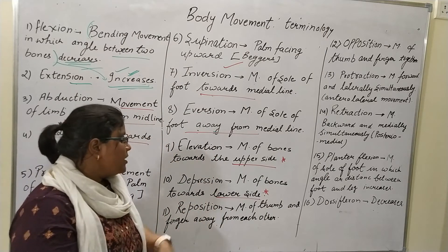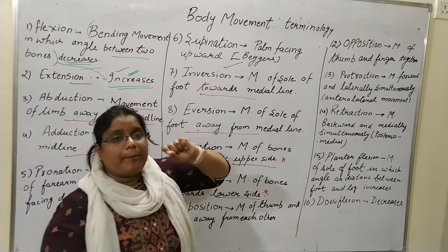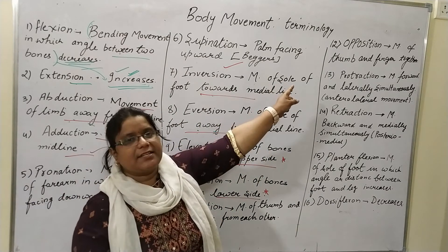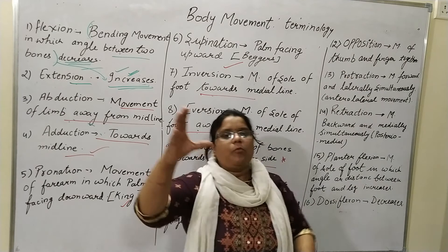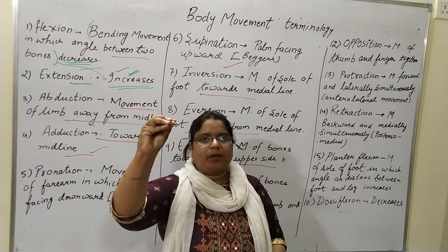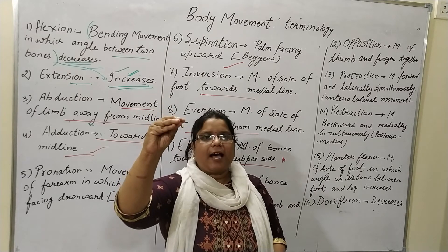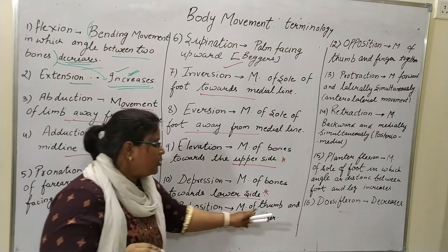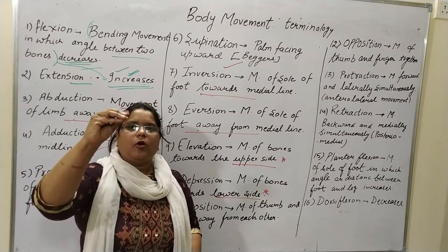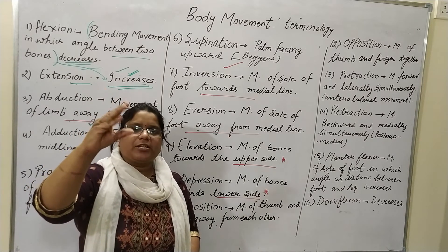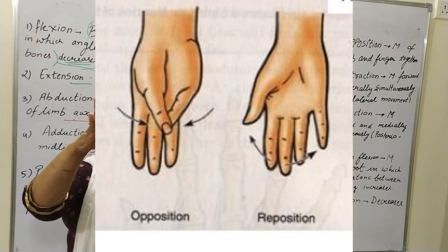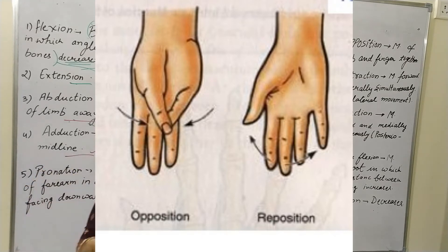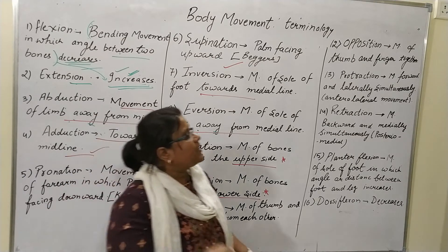Elevation is the movement of a bone towards the upper side; depression is the movement of a bone towards the lower side. Now, opposition and reposition. I will discuss opposition first — opposition is the movement of thumb and finger together. Reposition is the movement of thumb and finger away from each other. In the diagram you can easily understand what is opposition and what is reposition.